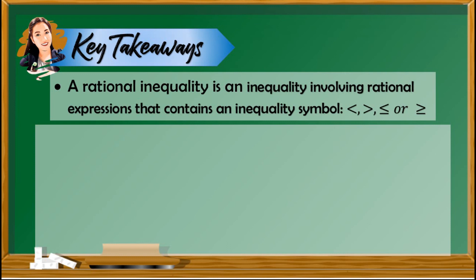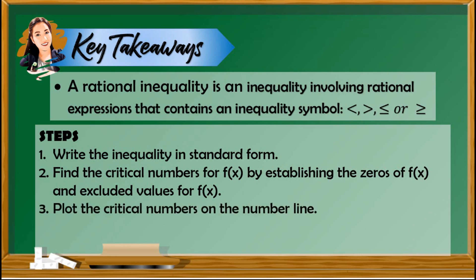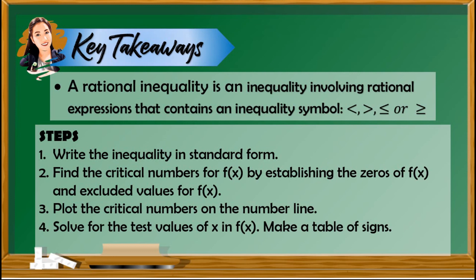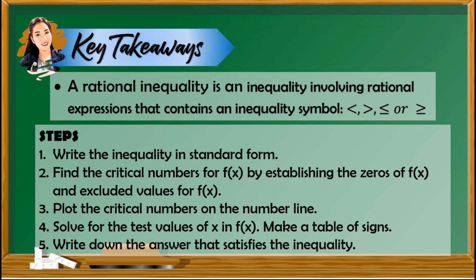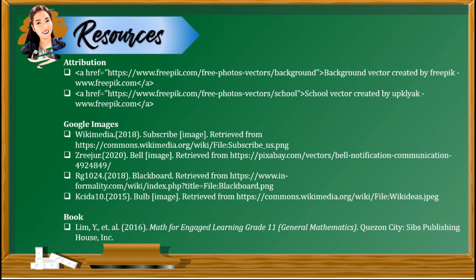Here are the key takeaways for this lesson. A rational inequality is an inequality involving rational expressions that contains an inequality symbol. To solve a rational inequality: first, write the inequality in standard form; second, find the critical numbers by establishing the zeros and excluded values of f of x; third, plot the critical numbers on the number line; fourth, solve for test values of x in f of x using a table of signs; and fifth, write down the answer that satisfies the inequality. All you have to do is follow the given steps. I hope you were able to follow. If you are new to my channel, please subscribe to Math Room by Teacher Joanne and click the notification bell. Bye everyone, see you in the next video.